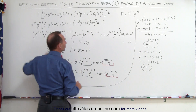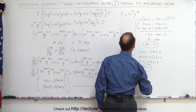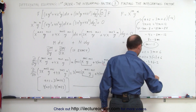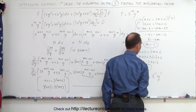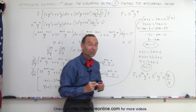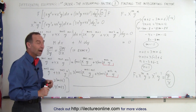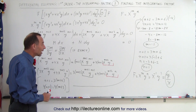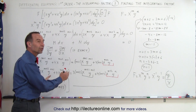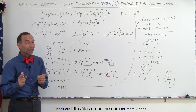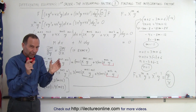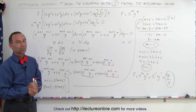Coming back to the integrating factor in general form f = x^m * y^n, substituting m = −1 and n = 1 gives f = x^(−1) * y^1, which means the integrating factor is y/x. That confirms what we had in the previous video. Now you see how to find the integrating factor — once you have it, multiply both sides of the differential equation by it to make the equation exact, then solve using normal techniques, which we'll do in the next video.